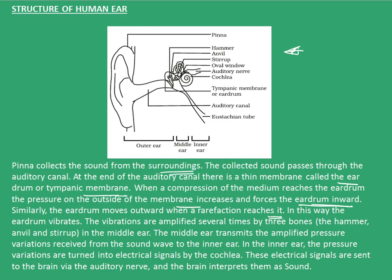In this way, the eardrum vibrates. The vibrations are amplified several times by three bones — the hammer, anvil, and the stirrup — in the middle ear. The middle ear transmits the amplified pressure variations received from the sound wave to the inner ear. In the inner ear, the pressure variations are turned into electrical signals by the cochlea. These electrical signals are sent to the brain via the auditory nerve and the brain interprets them as sound. So this is how the human ear works. With this, I end the topic on sound. Thank you.